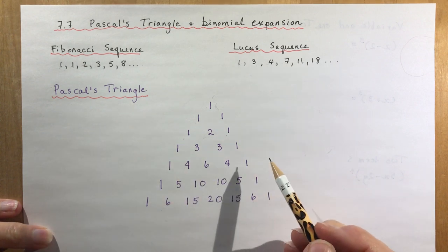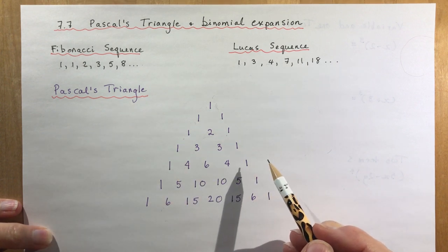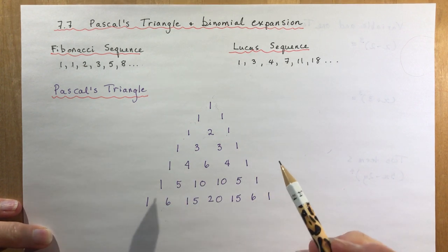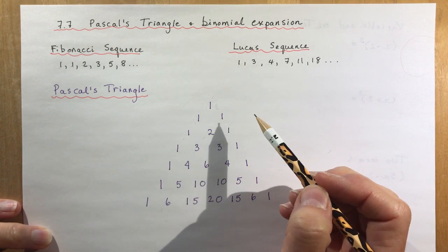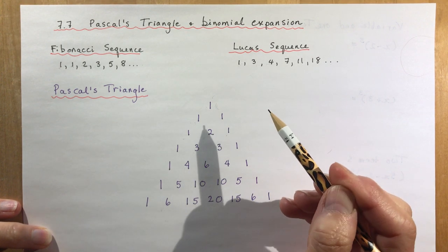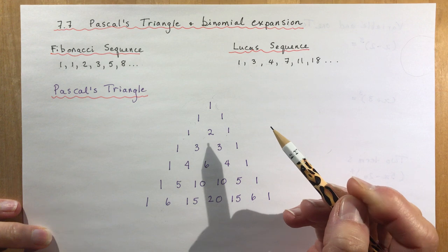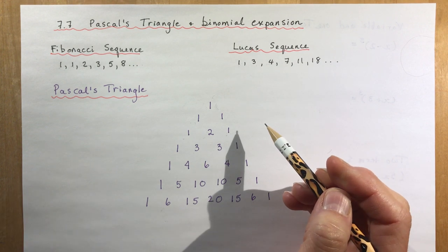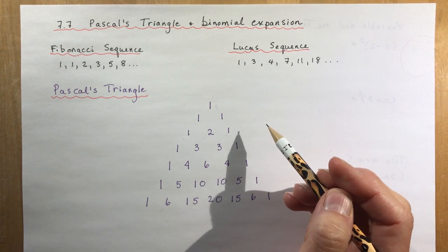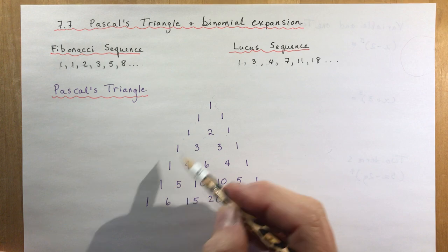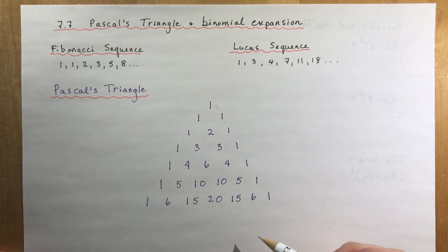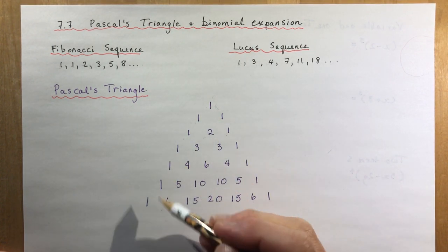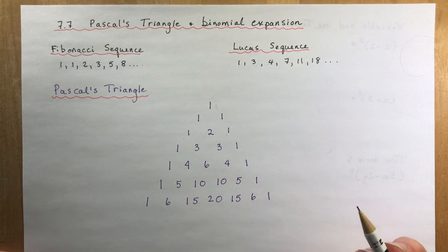So Pascal's triangle, named after Blaise Pascal — he got all the credit for it, though he didn't really invent it. It's been around much longer than Pascal. This is what Pascal's triangle looks like, and you should be able to draw this. I'm going to show you what makes more sense out of it.